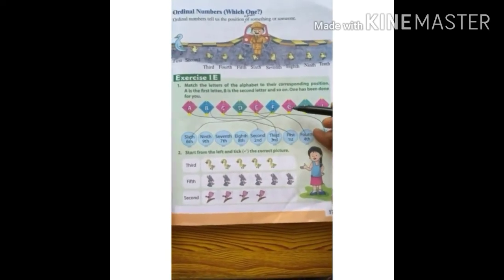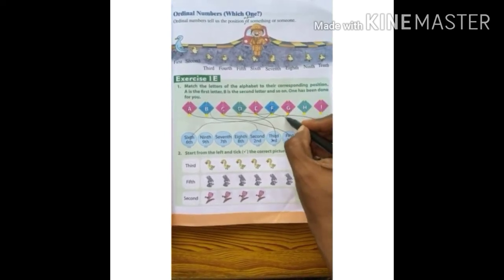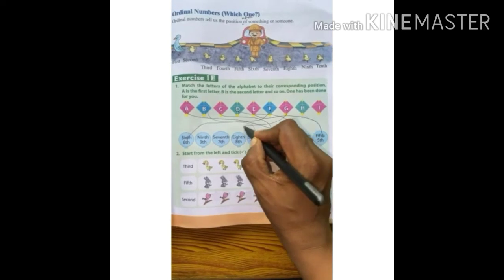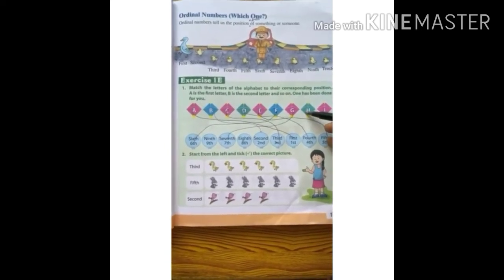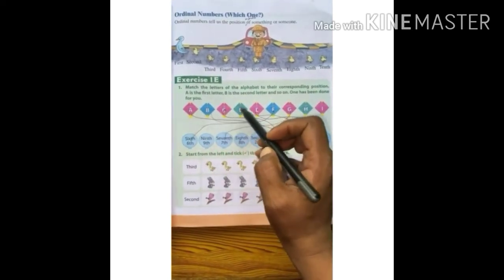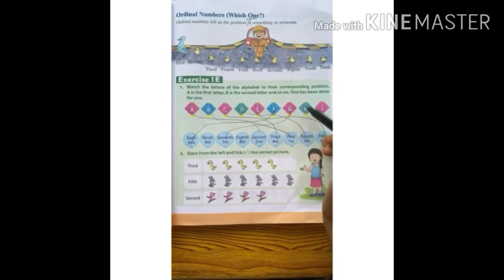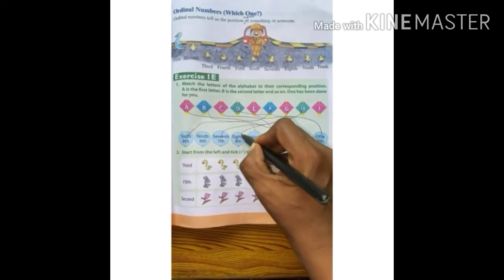Now G — G is in the 7th position, so we will draw a line to 7th. Now H — H is in which position? It is the 8th position. Let us count: 1st, 2nd, 3rd, 4th, 5th, 6th, 7th, 8th. So we will join a line from letter H to the 8th position. Done.